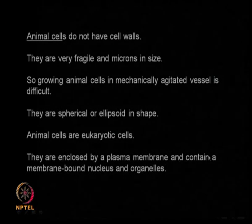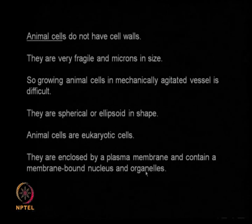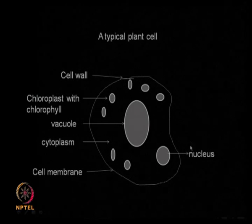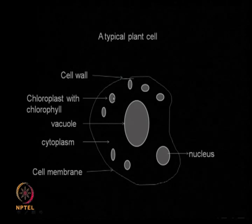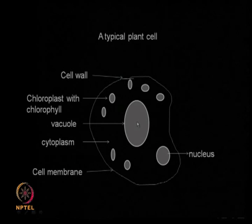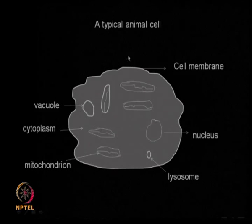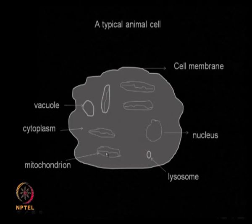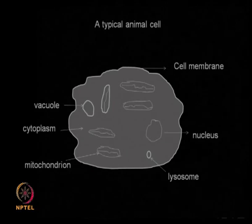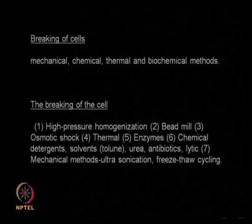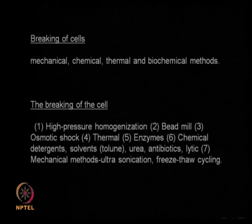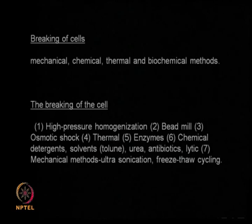Animal cells are eukaryotic, enclosed by a plasma membrane, and contain a membrane-bound nucleus and organelles. You need reactors that do not use mechanical agitation when culturing them. A typical plant cell has a cell wall, chloroplast with chlorophyll, vacuole, cytoplasm, cell membrane, and nucleus. A typical animal cell has a thin cell membrane, nucleus, lysosomes, mitochondria, cytoplasm, and vacuole — you can see a lot of difference between each type of cell.